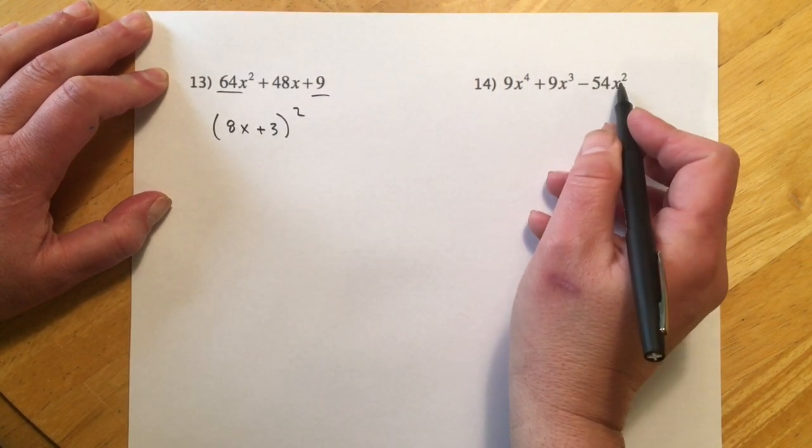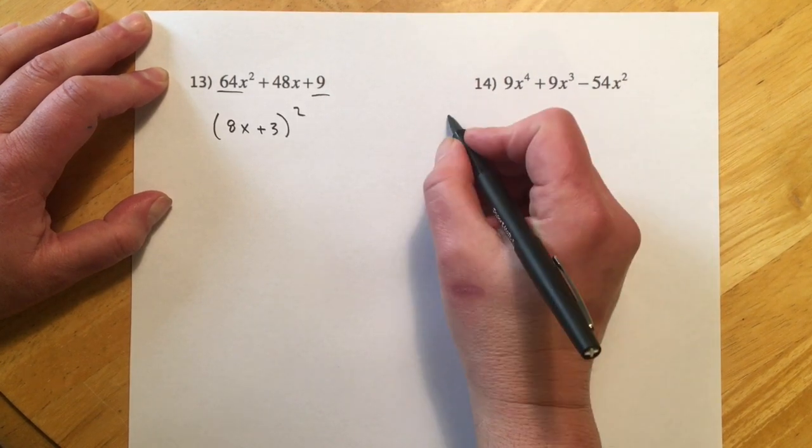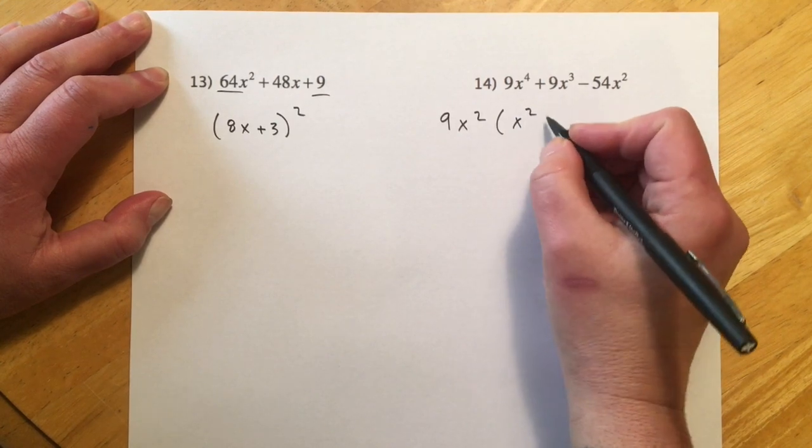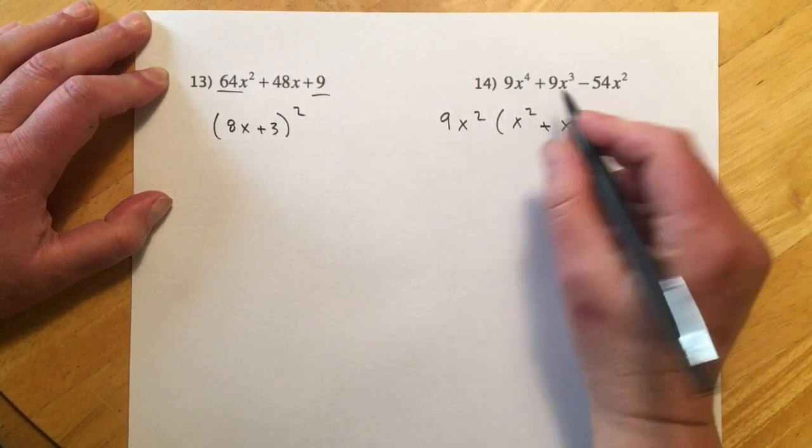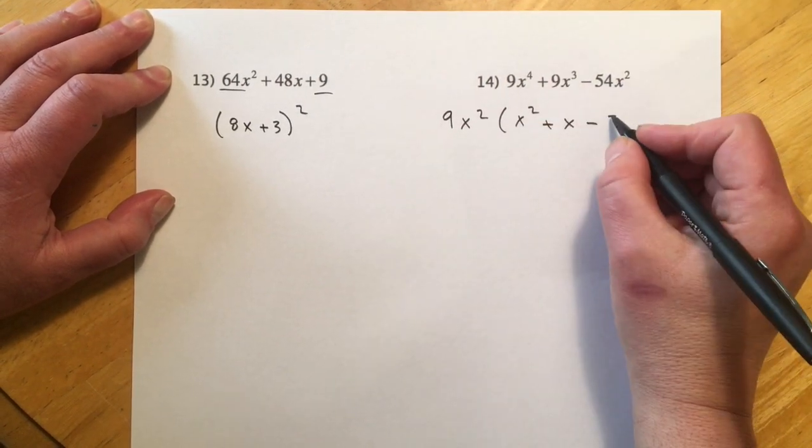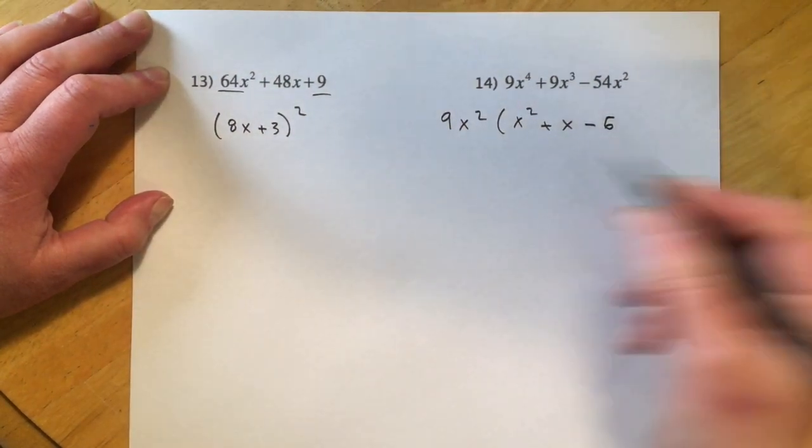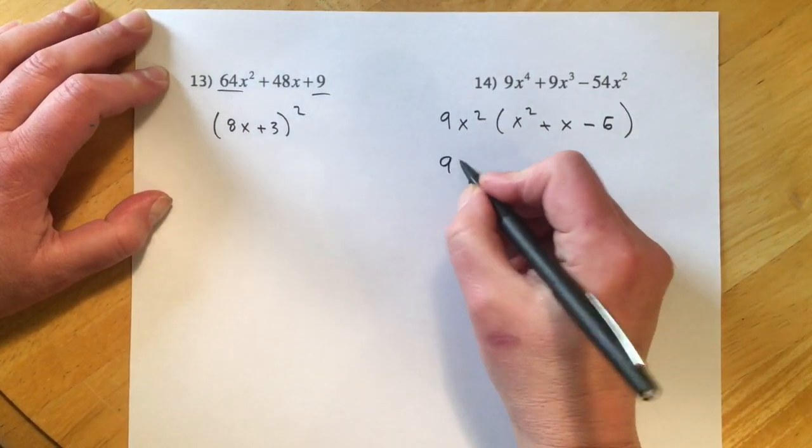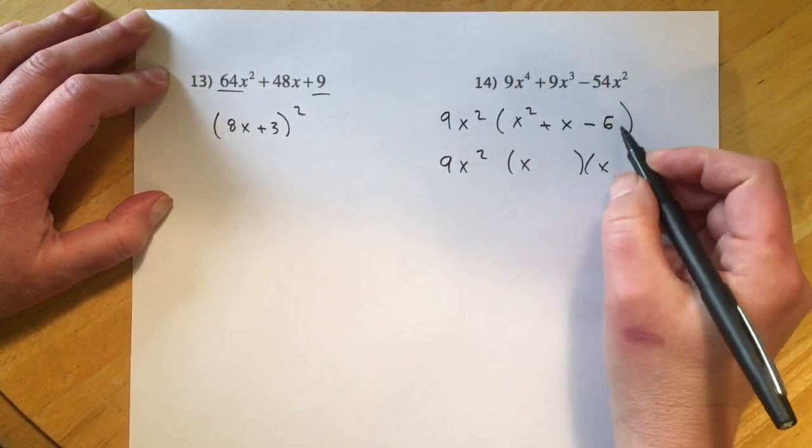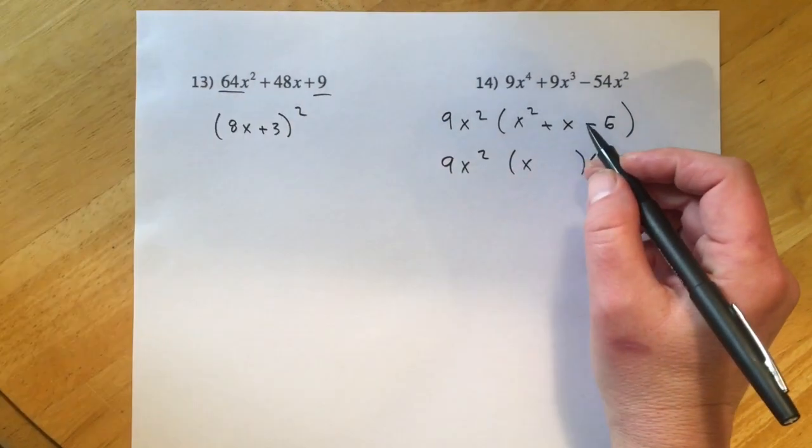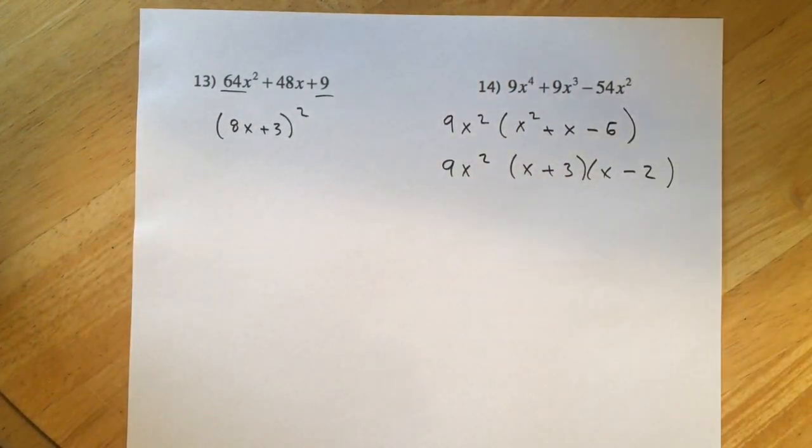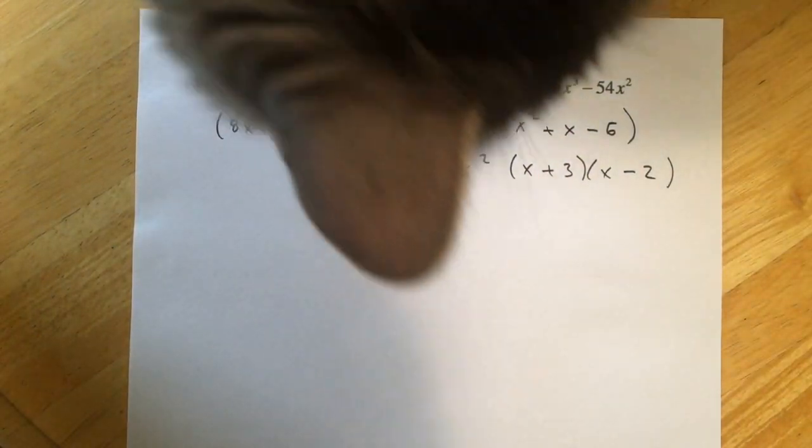Number 14, there's a GCF. And we can get a 9 out of there, which is going to help a bunch. Plus an X squared. So we got X squared plus X. And then 6 goes into 54. I'm sorry, 9 goes into 54, 6 times. So my cat is invading. So I'm finding that a little distracting. 9X squared. And we just need what multiplies negative 6 and it has to be positive 1. That's the cat. And let's see, plus 3 minus 2. There we go. There's the cat.